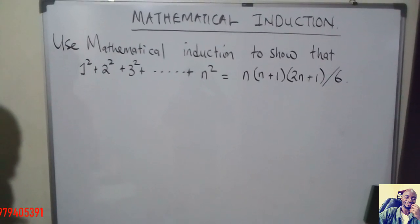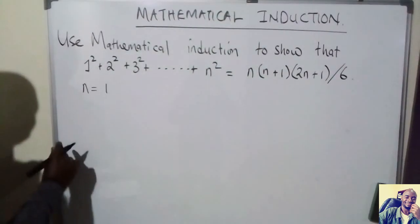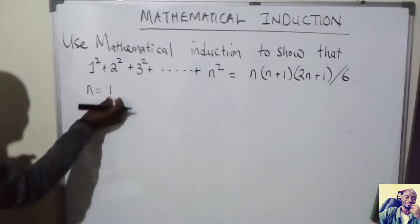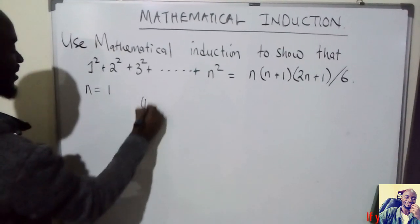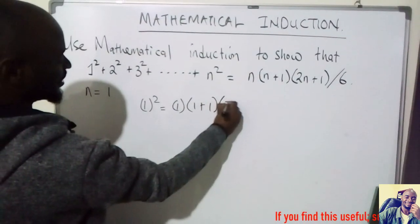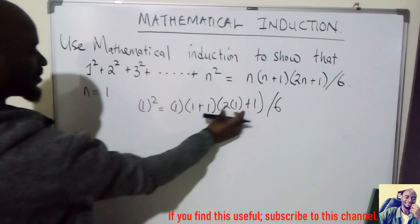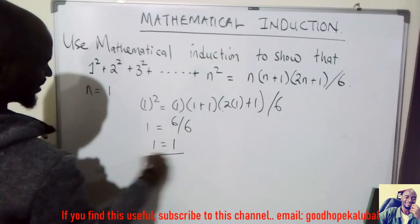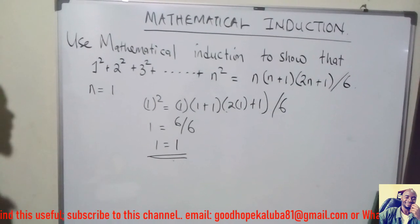So the first thing we have to do is let n equal to 1, and show that the formula is true for the smallest possible integer. So wherever there is n, I'll put 1. This gives us 1 squared equals 1 multiplied by (1+1) multiplied by (2×1+1) divided by 6. That simplifies to 1 equals 6 divided by 6, which is 1 equals 1. So we've shown it is true for n equals 1. That is the first step.